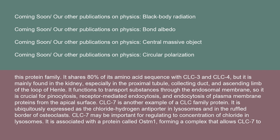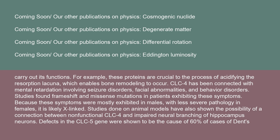CLC-7 is ubiquitously expressed as the chloride-hydrogen antiporter in lysosomes and in the ruffled border of osteoclasts. It may be important for regulating chloride concentration in lysosomes and is associated with a protein called OSTM-1, forming a complex that allows CLC-7 to carry out its functions. These proteins are crucial to the process of acidifying the resorption lacuna, which enables bone remodeling to occur.